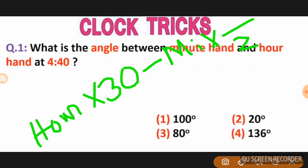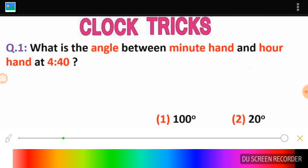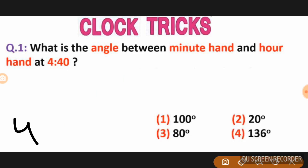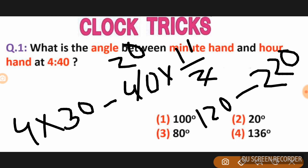The traditional method formula is: hour into 30 minus minute into 0.5. So we take the hour value times 30, then subtract the minute value times 0.5. This gives us the angle in degrees.